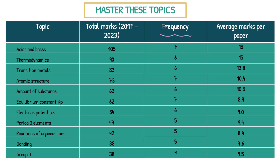So start with the fundamentals. The two fundamental topics I advise all my students to start with, and they've had insane success with this, are atomic structure and amount of substance. Master the fundamentals of these two topics and it will help you so much with all the others. Lastly, average marks per paper — I've simply divided the total marks by the frequency to give you the average marks per paper that topic appeared in. The top five to focus on are acids and bases, thermodynamics, transition metals, atomic structure, and amount of substance. Start with those two fundamentals, build from there, then branch out — a bit of electrode potentials, then some inorganic like period 3 and reactions of aqueous ions. Use this table however you want.